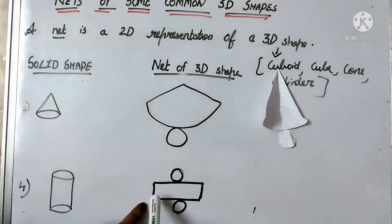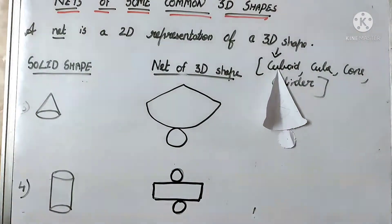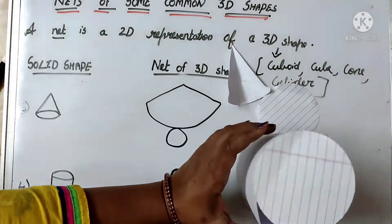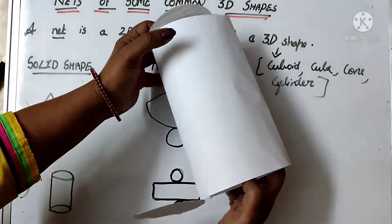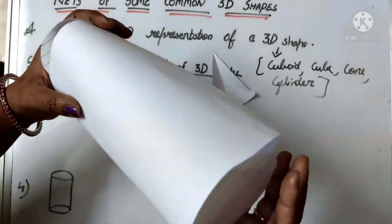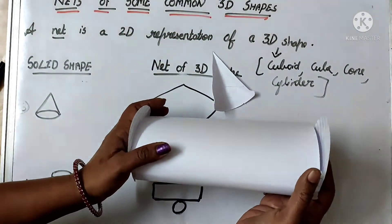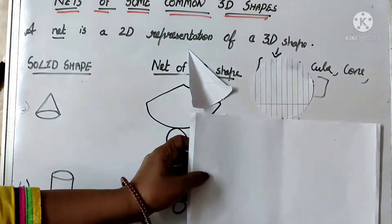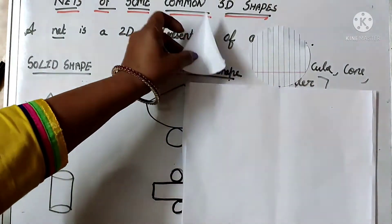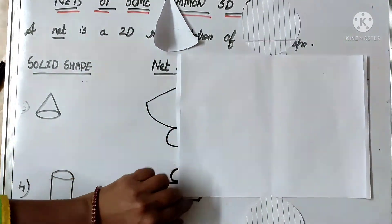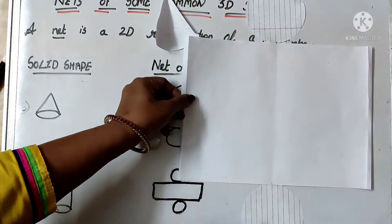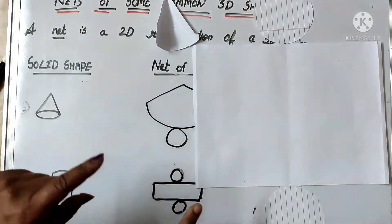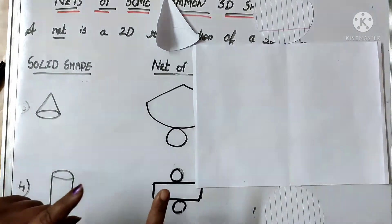Similarly, the net of a cylinder — how will it look? A rectangle and two circles. I can show you — this is a cylinder I have made with paper. This is the shape of a cylinder. Now if I open this cylinder, you can see it is looking like a rectangle and two circles. This is the net of a cylinder.